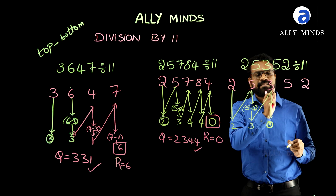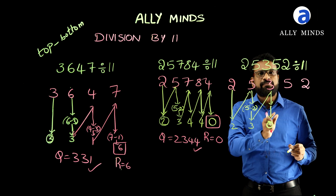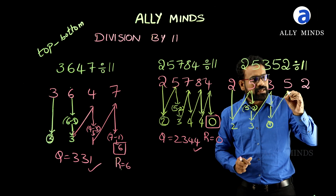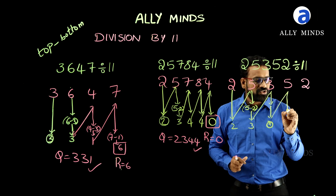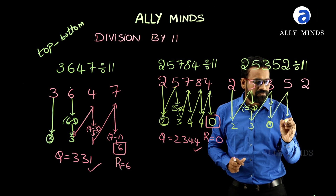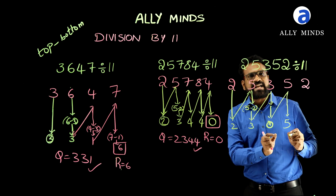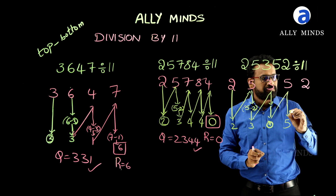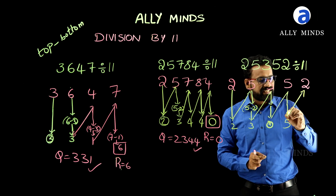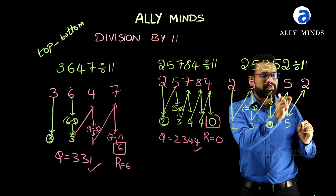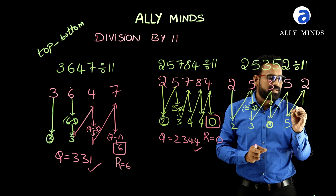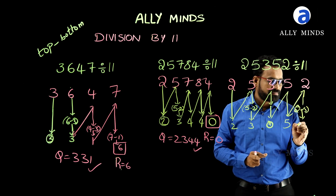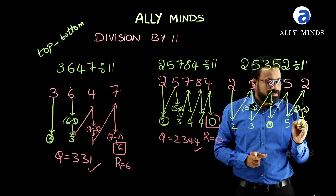Again, we have to subtract this bottom number 0 from the top number 5. 5 minus 0 is 5. Again, we have to subtract this bottom number 5 from the top number 2. 2 minus 5 is minus 3.